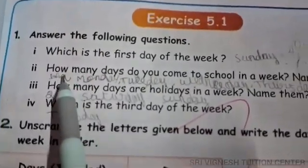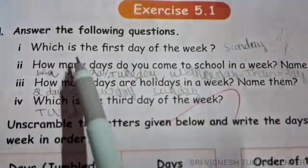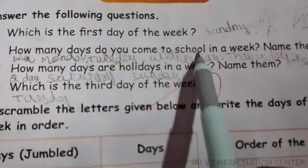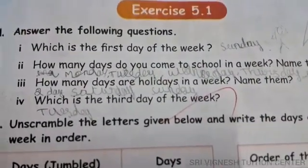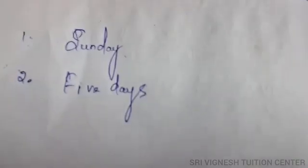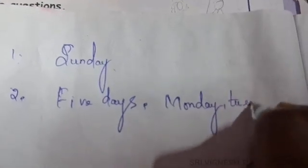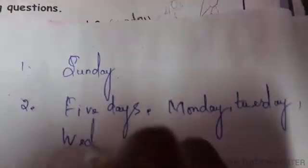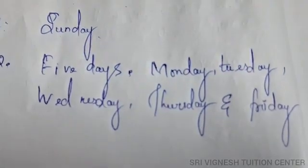Next question: How many days do you come to school in a week? Name them. You go to school for five days: Monday, Tuesday, Wednesday, Thursday, and Friday.